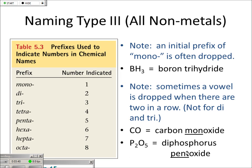So 'pent' means five — you can use this chart. You don't want two vowels in a row; there are just some weird naming conventions. It sounds a little weird too: 'penta oxide' versus 'pentoxide.' I've seen this so many times it still sounds weird to me.